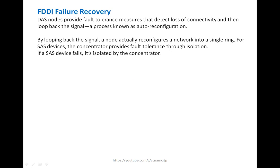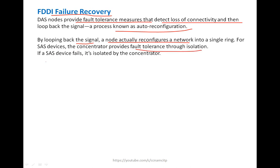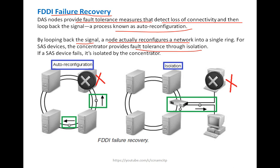FDDI failure recovery: DAS nodes provide fault tolerance by detecting loss of connectivity and looping back signals — a process known as auto-reconfiguration. By looping back the signal, a node actually reconfigures the network into a single ring. For SAS devices, the concentrator provides fault tolerance through isolation: if a SAS device fails, it is isolated by the concentrator. In a DAS failure, the secondary cable will automatically take charge.